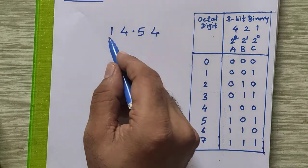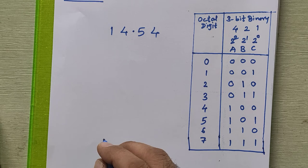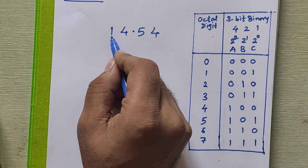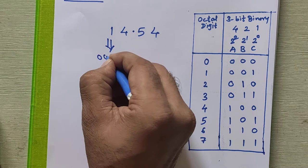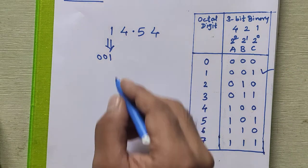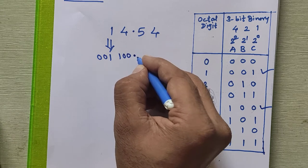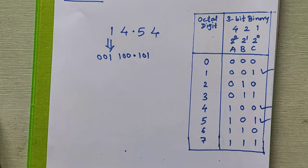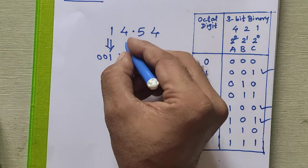Coming back to our problem: the given number is 14.54 in octal and we have to convert it to binary. For each octal digit we write its 3-bit binary equivalent. The digit 1 is 0 0 1. The digit 4 is 1 0 0. Then the decimal point. The digit 5 is 1 0 1. And the digit 4 is 1 0 0.